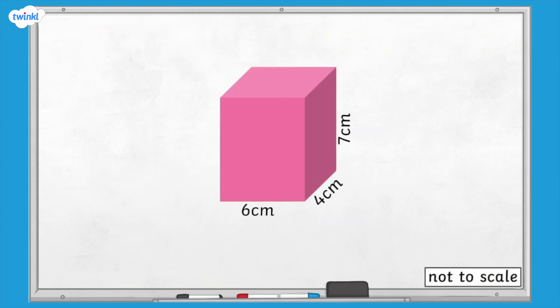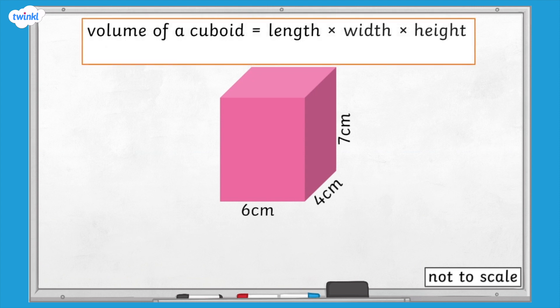Here we have a cuboid with dimensions of 6 centimetres, 4 centimetres, and 7 centimetres. All of the units of measurement are the same, so we can calculate the volume. Remember, the volume of a cuboid can be calculated by multiplying the length by the width by the height.